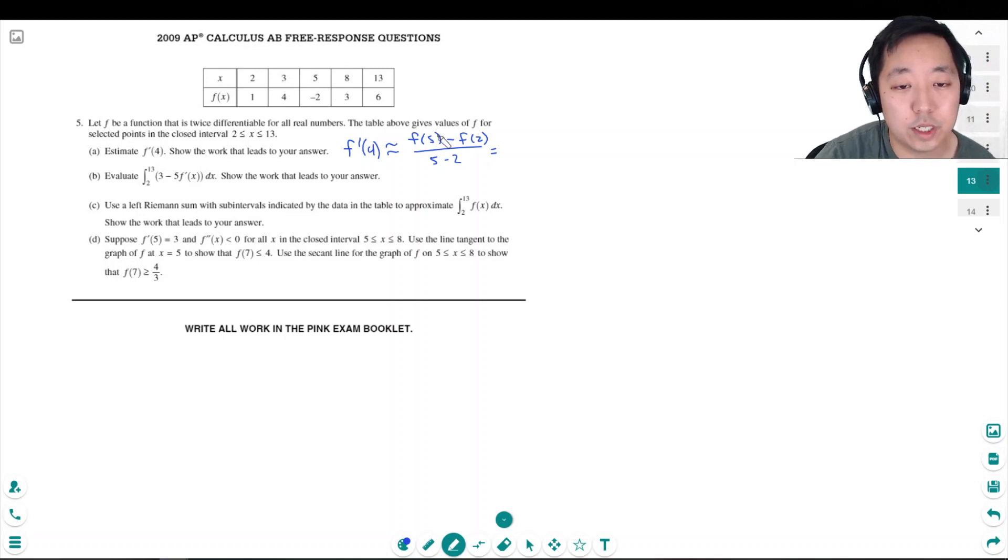Oh, 4 is here, so I gotta do 5 and 3. I don't know what I'm thinking. 5 and 3, these two.